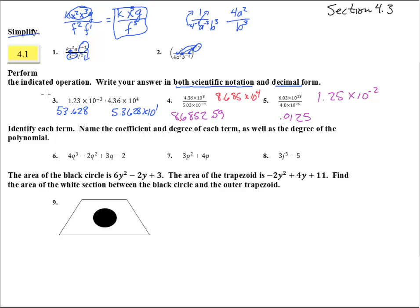Number 6 — we are asked to identify each term and name the coefficient and degree of each term. The four terms are: 4q cubed, negative 2q squared, 3q, and negative 2. The coefficients are 4, negative 2, 3, and negative 2 — just the numbers. The degree of each term: 3, 2, 1, and 0 — we're taking the powers. The degree of the polynomial is the highest of these, so the degree of the polynomial equals 3.